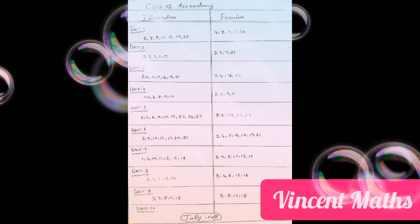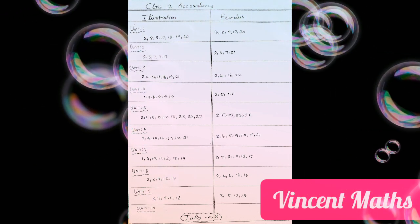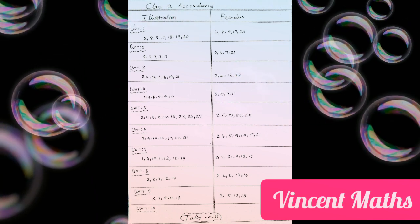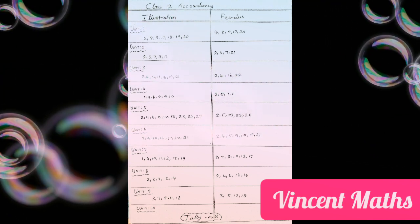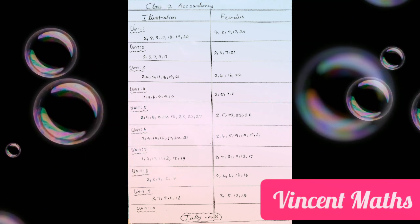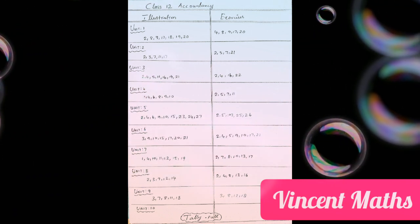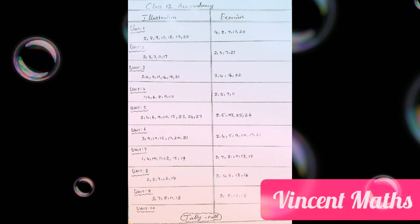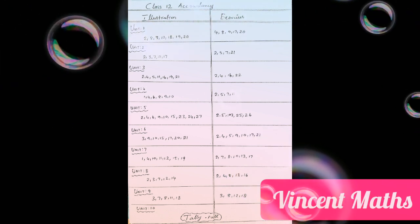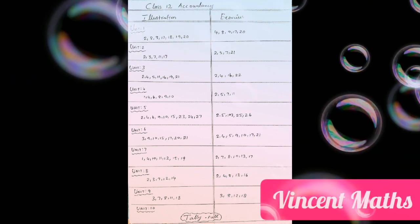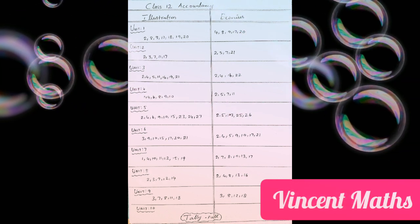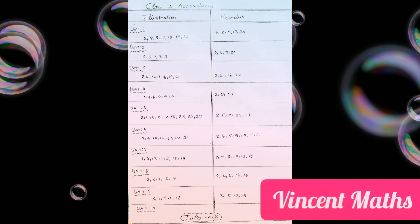The important numbers for the 3rd unit are: 2nd, 4th, 5th, 11th, 16th, 19th, 21st, 2nd, 6th, 7th, and 19th.